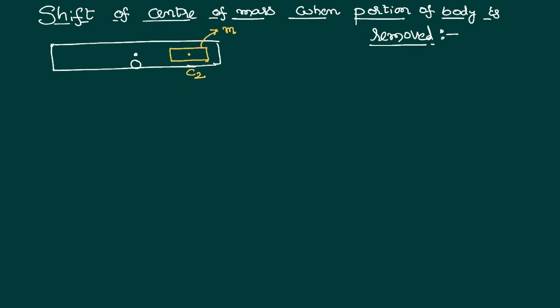Now, on the right side of the body there is less mass, and on the left side of the body there is more mass. Therefore, the new system with a portion of the mass removed is no more going to have the center of mass at O. Rather, it will shift towards the heavy side. Let it shift from point O to a new position — let that new position be equal to C1.